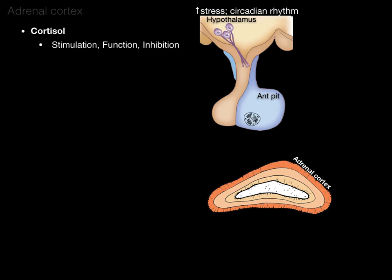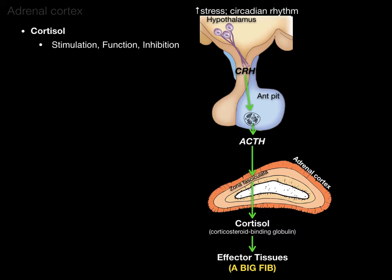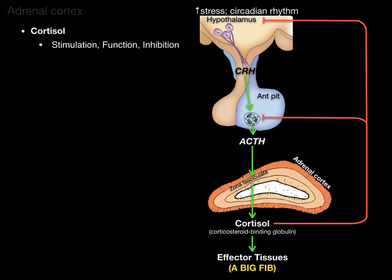In a stressful situation, the hypothalamus secretes CRH — corticotropin-releasing hormone — which targets cells in the anterior pituitary. The anterior pituitary produces and secretes ACTH — adrenocorticotropic hormone — which targets the adrenal cortex, specifically the zona fasciculata. The zona fasciculata then produces cortisol, which flows into the blood by binding to corticosteroid binding globulin. As cortisol increases in blood, it provides negative feedback to the anterior pituitary and hypothalamus to stop secreting CRH and ACTH, bringing cortisol levels back down.